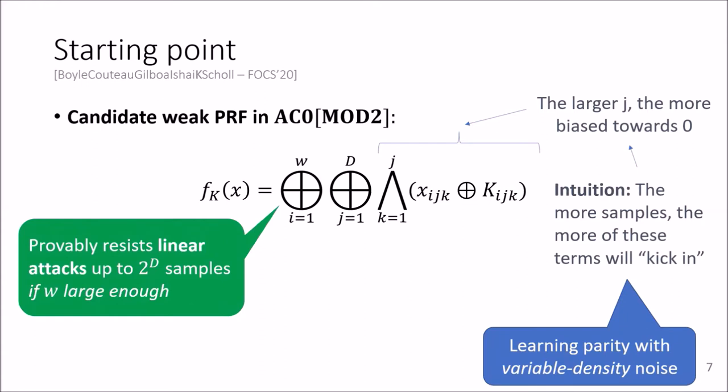And the outer XOR is important to ensure that linear attacks fail. So linear attacks are an attack framework that captures large classes of attacks that apply to learning parity with noise-like assumptions, such as Gaussian elimination, statistical decoding, and BKW.